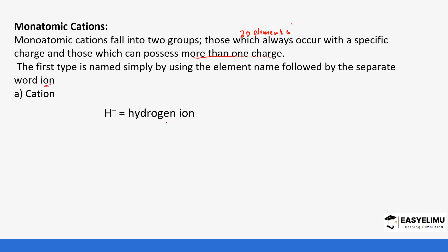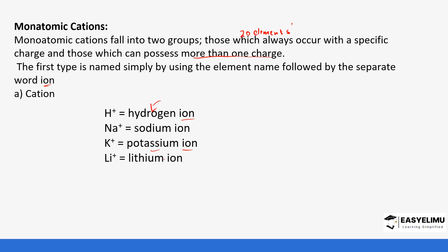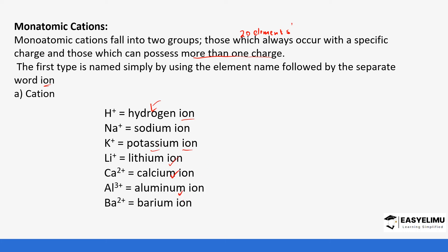For example: hydrogen ion - the name is not changing, we just add 'ion'. We have sodium ion, potassium ion - the word potassium is written and we just add ion at the end. We have lithium ion, calcium ion, aluminium ion, barium ion, and magnesium ion.